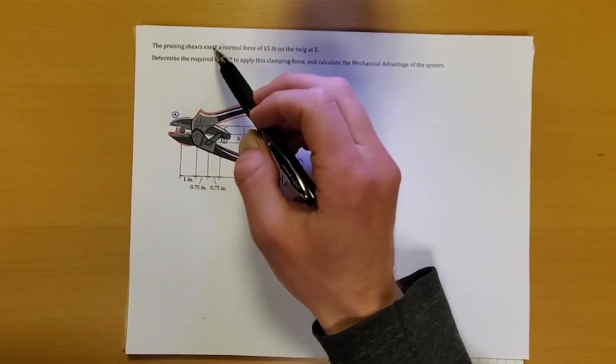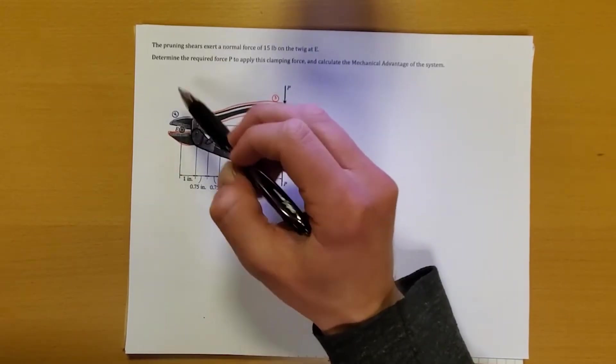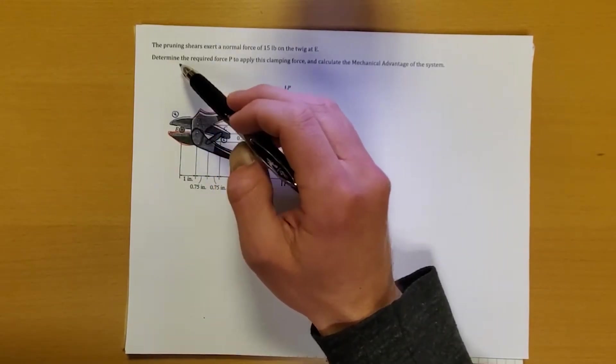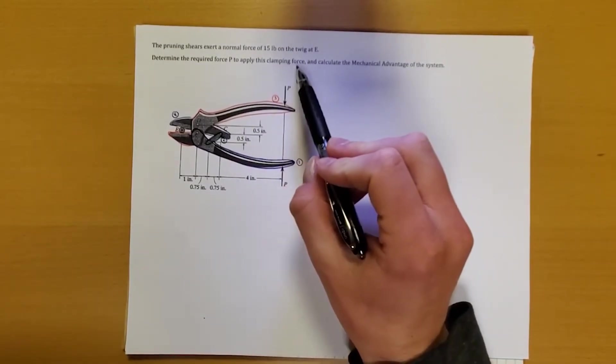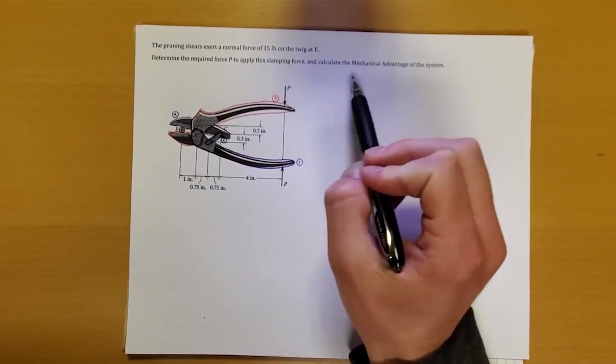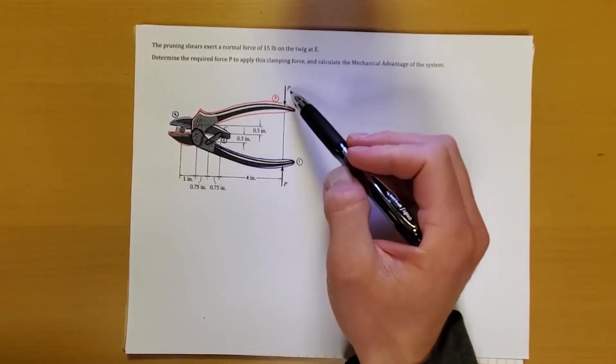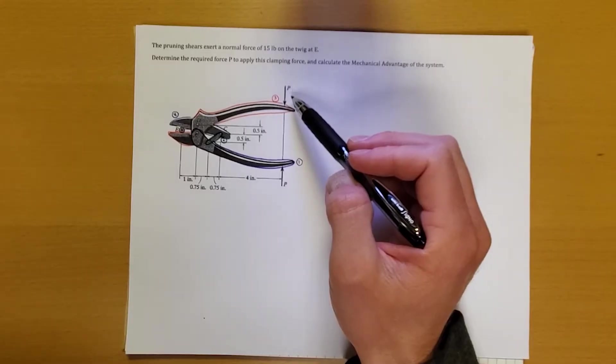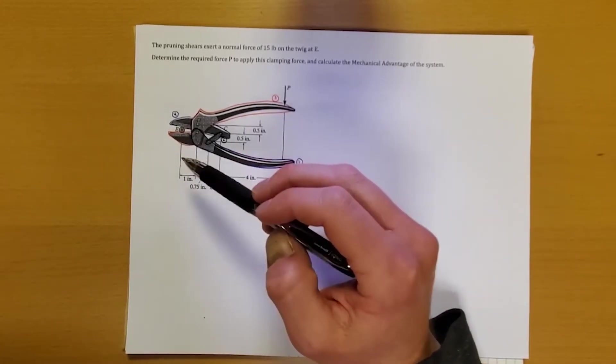What we're told is the pruning shears exerted normal force of 15 pounds on the twig at point E. So we're cutting a twig, we're out doing some yard work, and we're trying to figure out what's the required force P needed to apply this clamping force. And what we're going to do is try and calculate the mechanical advantage of the system. So the whole point of pruning shears is that ideally over here we might apply 5 pounds of force, and on the outside the cutting force will be 15.